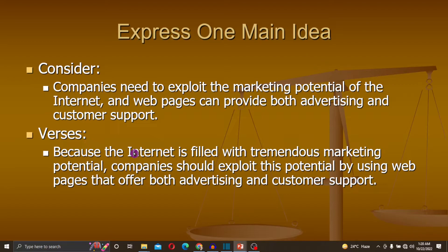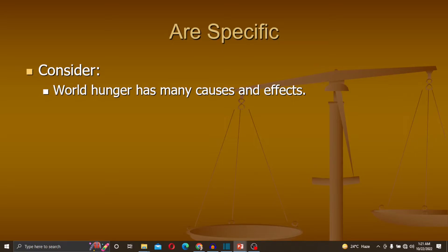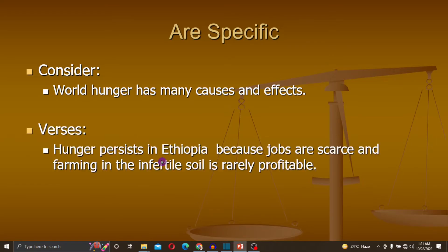How can we make a thesis specific? Consider: 'Hunger persists in utopia because jobs are scarce and farming in the infertile soil is rarely profitable.' This is a specific statement. In a thesis, we have to modify the general statement into a specific statement.